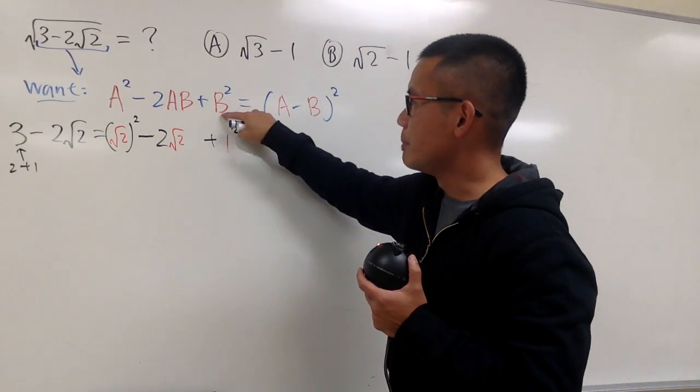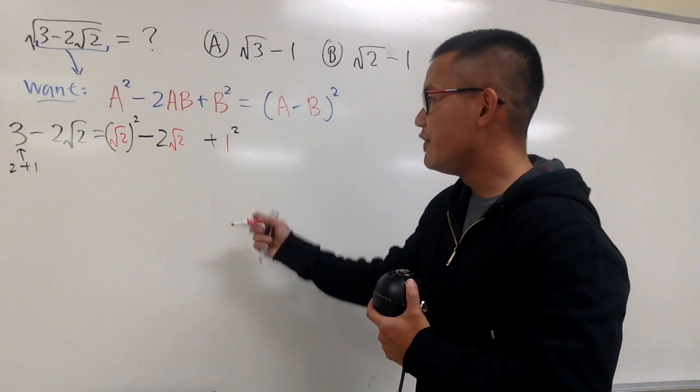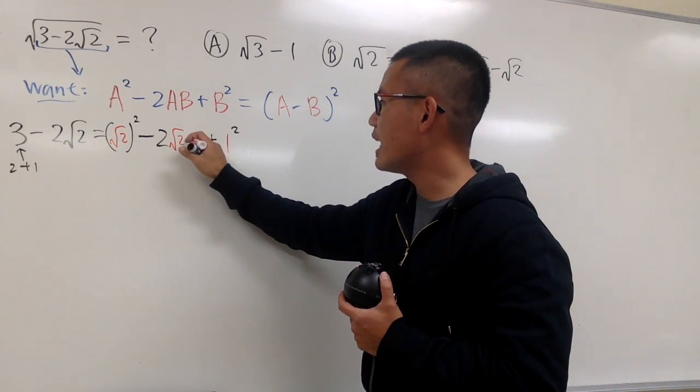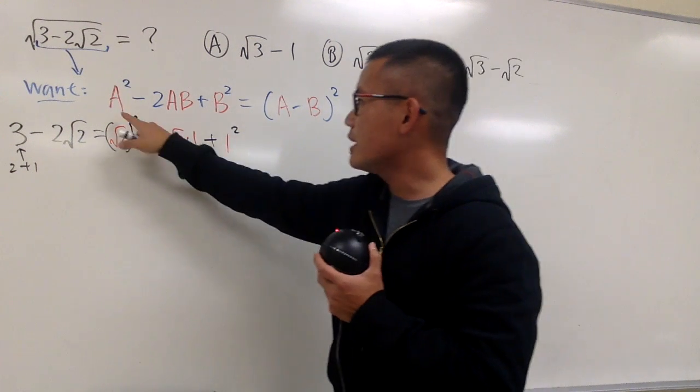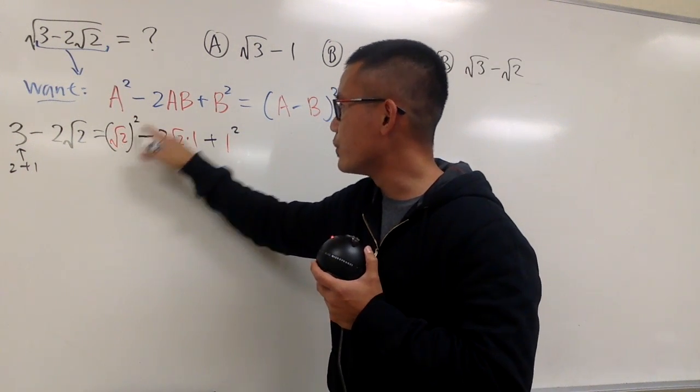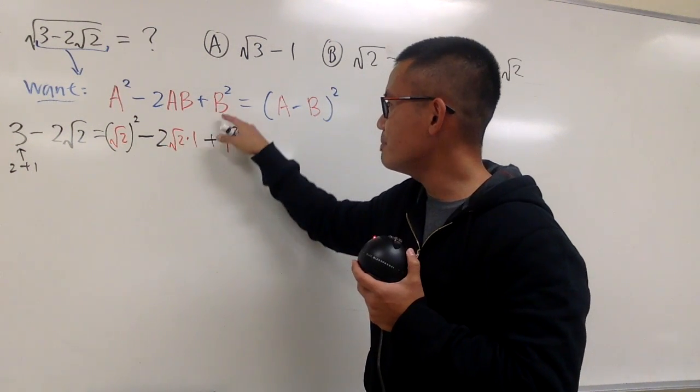In another word, 1 is the b value. And if you would like, you can go ahead and put down times 1. Of course, you wouldn't change anything when you multiply by 1. So as you can see, a is √2, a is √2, b is 1, b is 1.